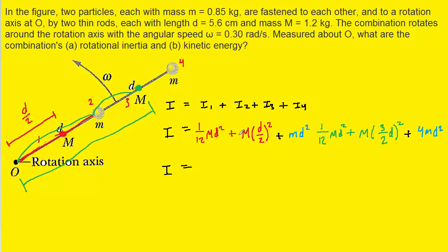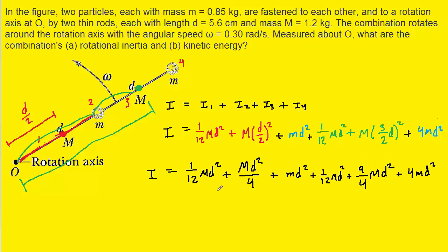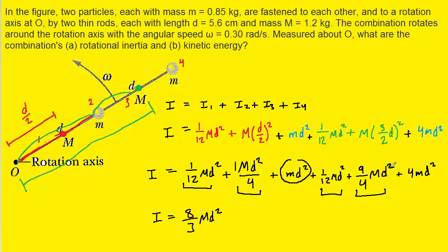Let's simplify this expression. The term m(d/2)² gives md²/4, and squaring 3/2 gives 9/4 times mass times d squared. Looking at the like terms: 9/4 plus 1/12 plus 1/4 plus 1/12 of capital M d squared gives us 8/3 capital M d squared. The lowercase m d squared terms combine to give 5 lowercase m d squared.